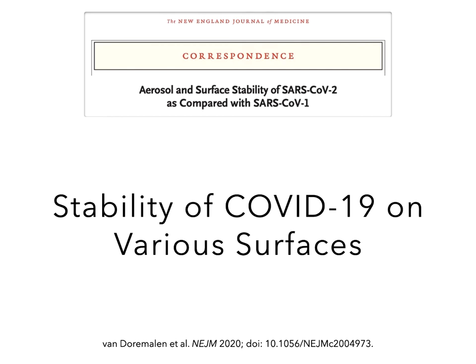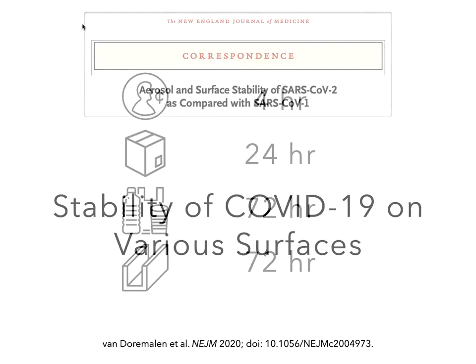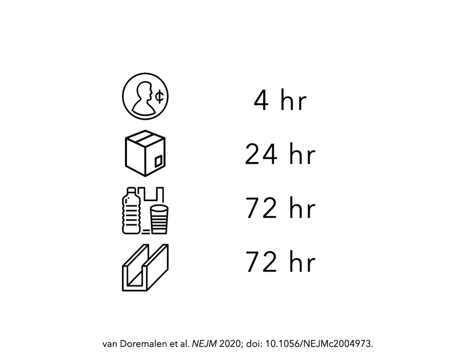Most everyone has seen this New England Journal of Medicine study where the authors assessed the stability of COVID on different surfaces. Viable virus was found up to 4 hours on copper, 24 hours on cardboard, and 72 hours on plastic and stainless steel. That's why it's so important to be systematic with your infection control measures.